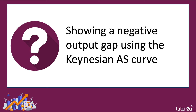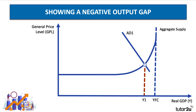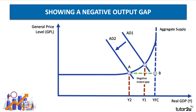How do we show a negative output gap using the Keynesian aggregate supply curve? Let's take a situation with output of Y1 — that's below full capacity. Assume there might be some recessionary effects, so maybe a fall in AD from AD1 to AD2, causing a contraction of GDP to Y2. You can see that Y2 is quite a distance — distance AB — below full capacity. So that will be a widening of a negative output gap, and the economy is operating within its production possibility frontier at a level of actual GDP well below its capacity.